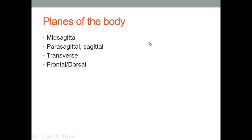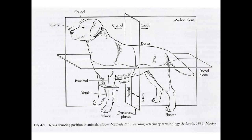Planes of the body divide the body into parts for examination. Mid-sagittal divides the body down the middle into right and left halves. Parasagittal refers to unequal right and left halves. The transverse plane divides the body into front and back halves. The frontal or coronal plane is also front and back — anterior and posterior for humans, or dorsal and ventral for animals. Here's a transverse plane cutting a leg in half. This is a sagittal or midsagittal plane. And this is a coronal or dorsal plane.